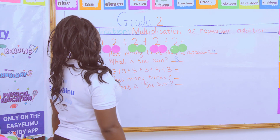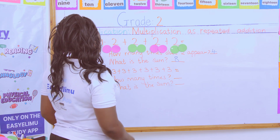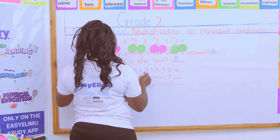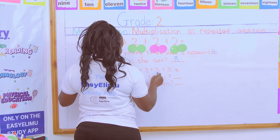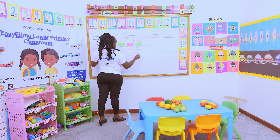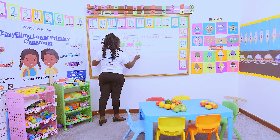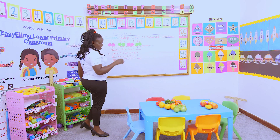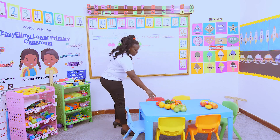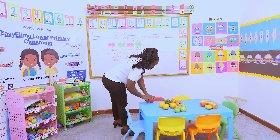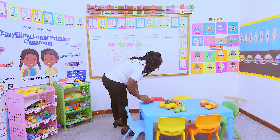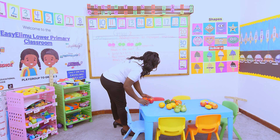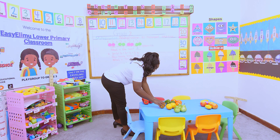My next question says how many times — we count one, two, three, four, five, six. So how many times does three appear? Six times. But now what is the sum? We are saying three has appeared how many times? It has appeared six times.